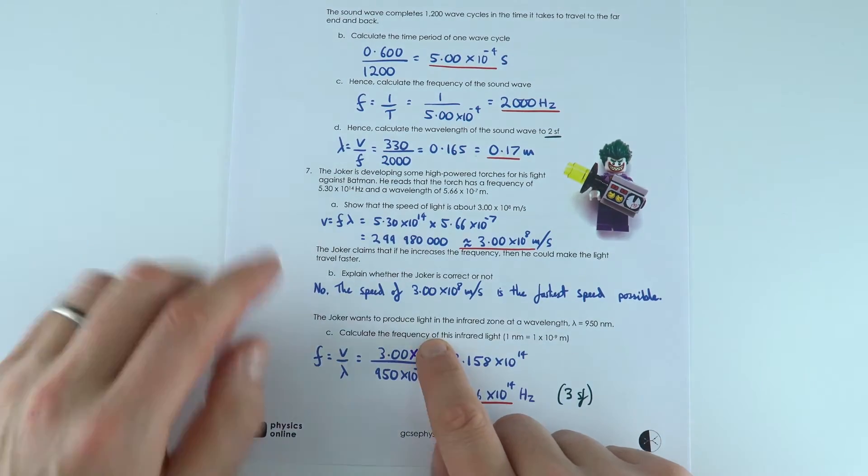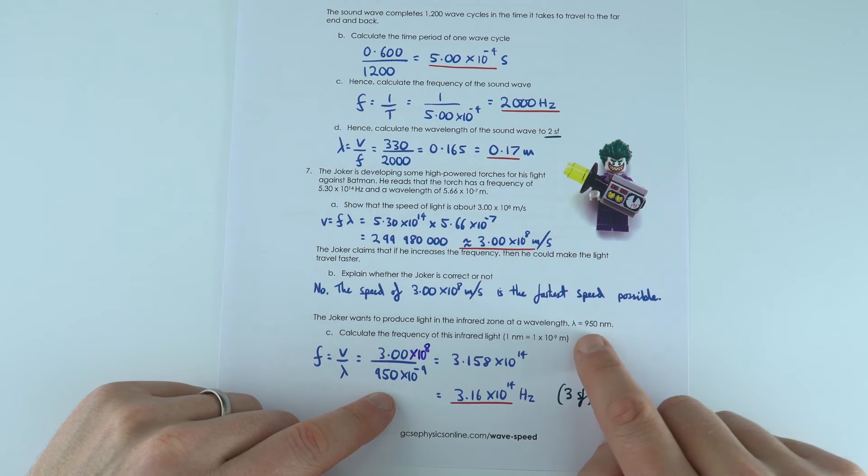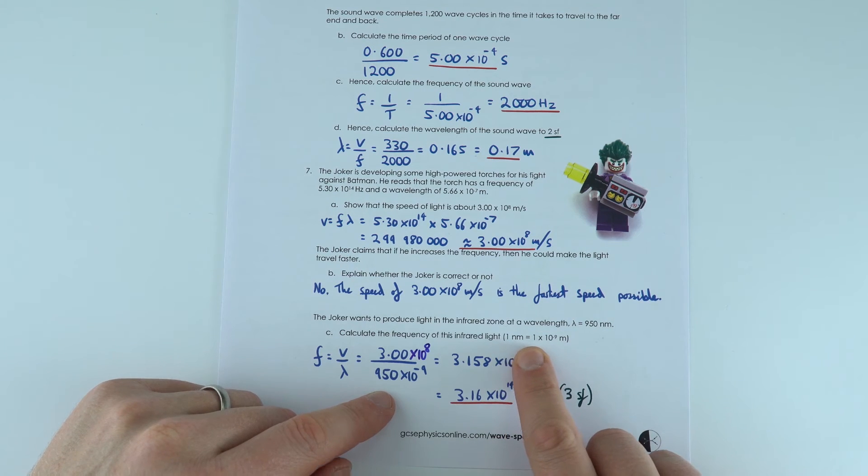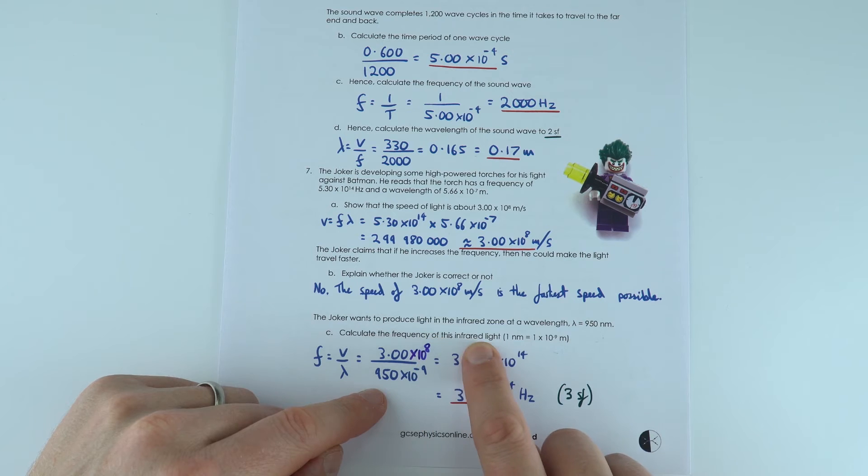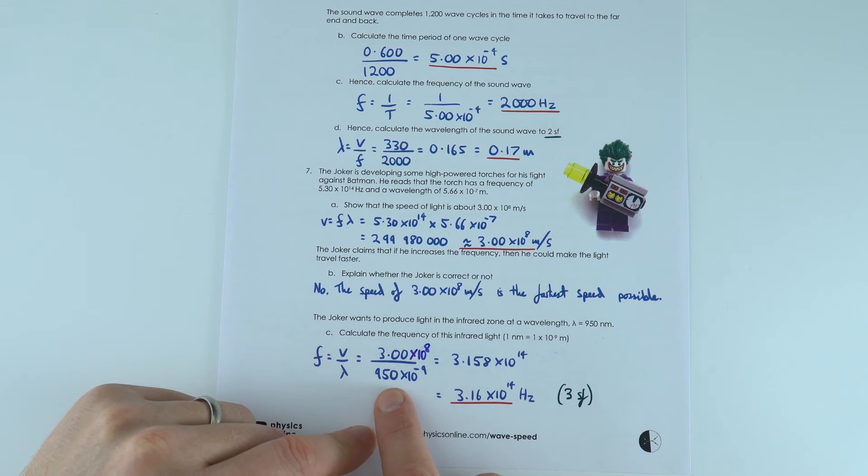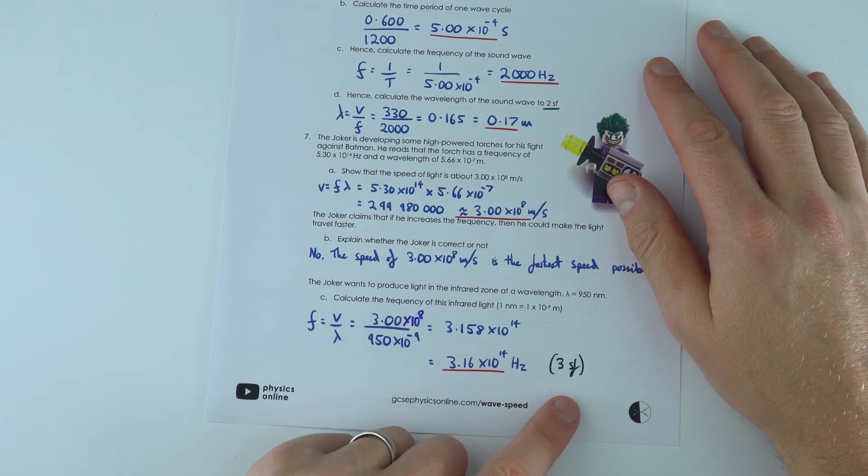And then we use this value here when we have this wavelength of 950 nanometers, and I've said here that 1 nanometer is 1 times 10 to the minus 9 meters. You do not need to know that at GCSE. You don't need to remember that, but I think you can have a go at doing questions like this where you've been given data in the question. So that's why it's 950 times 10 to the minus 9, which gives a value of 3.16 times 10 to the 14 hertz to three significant figures.